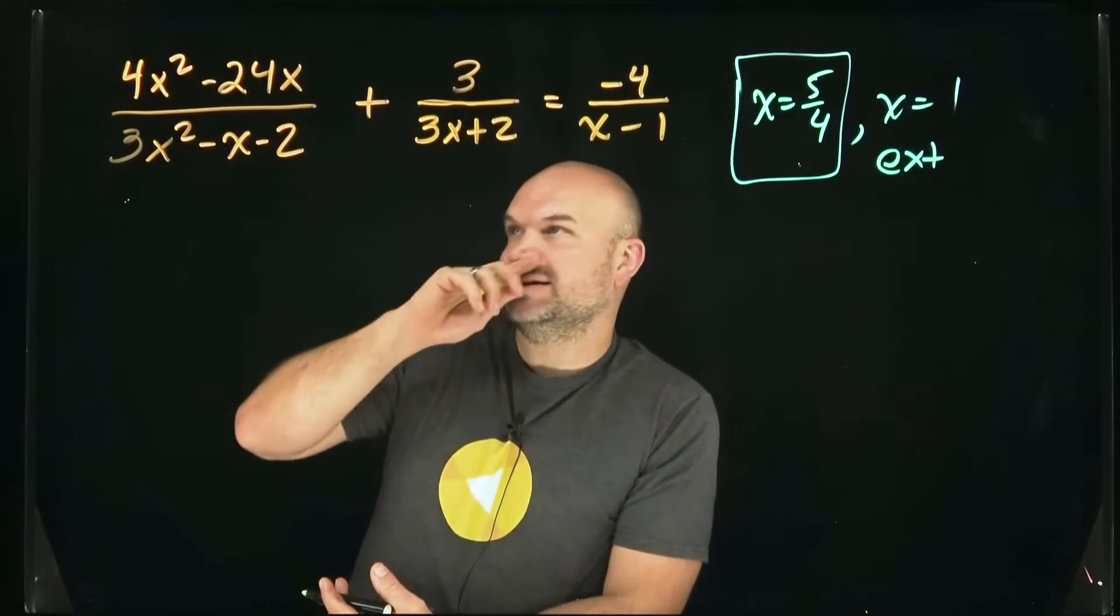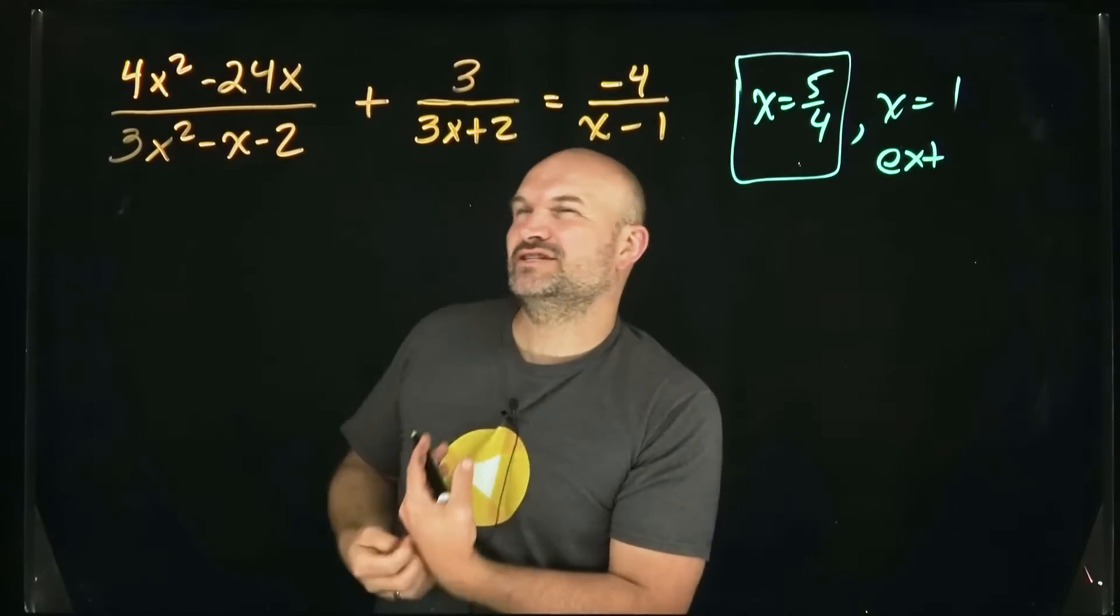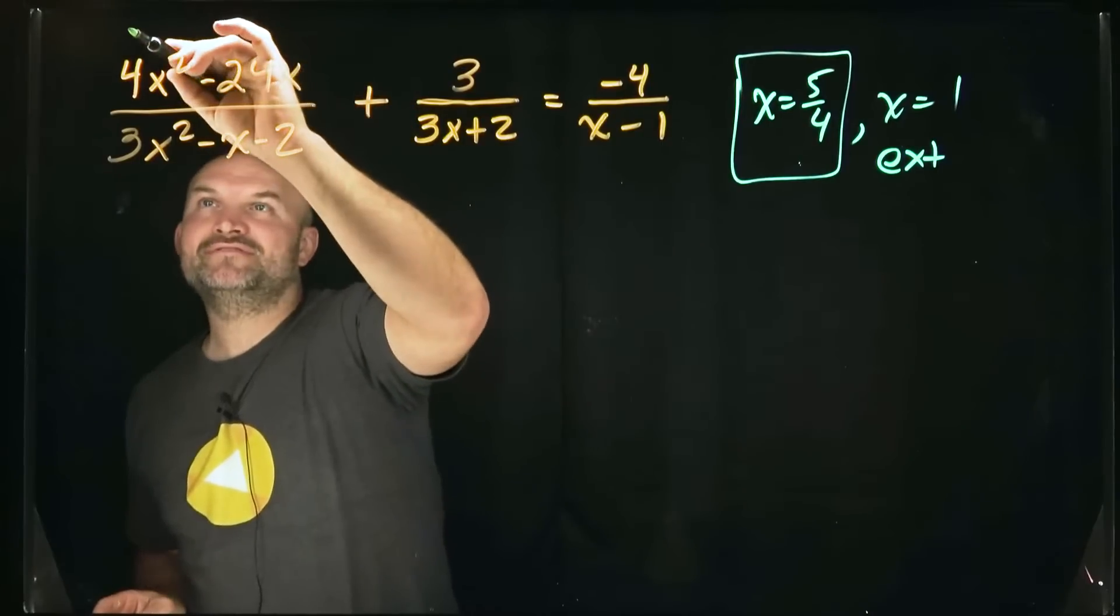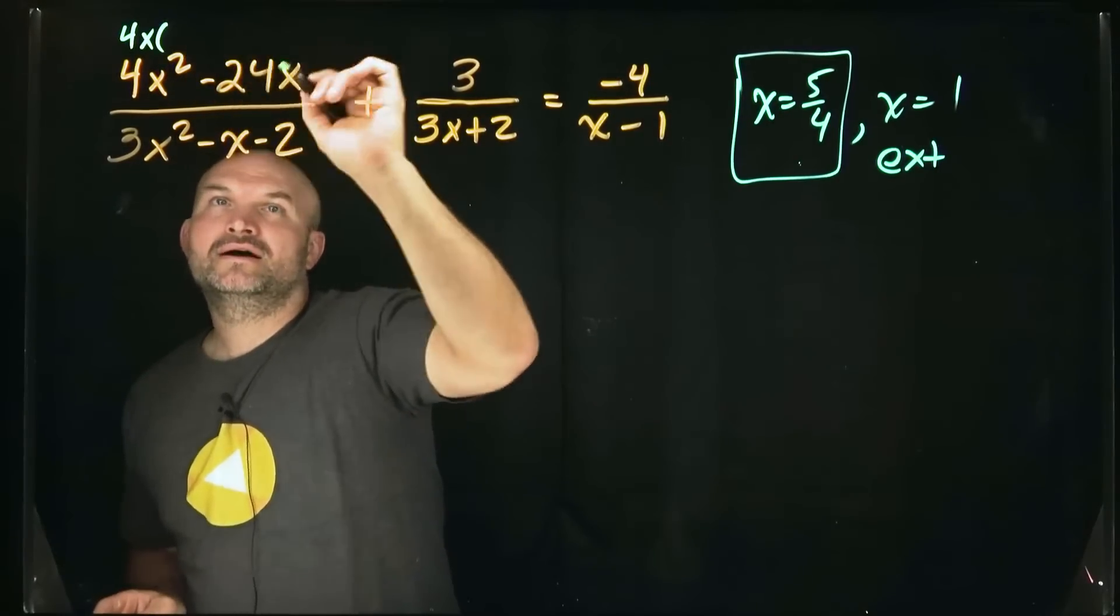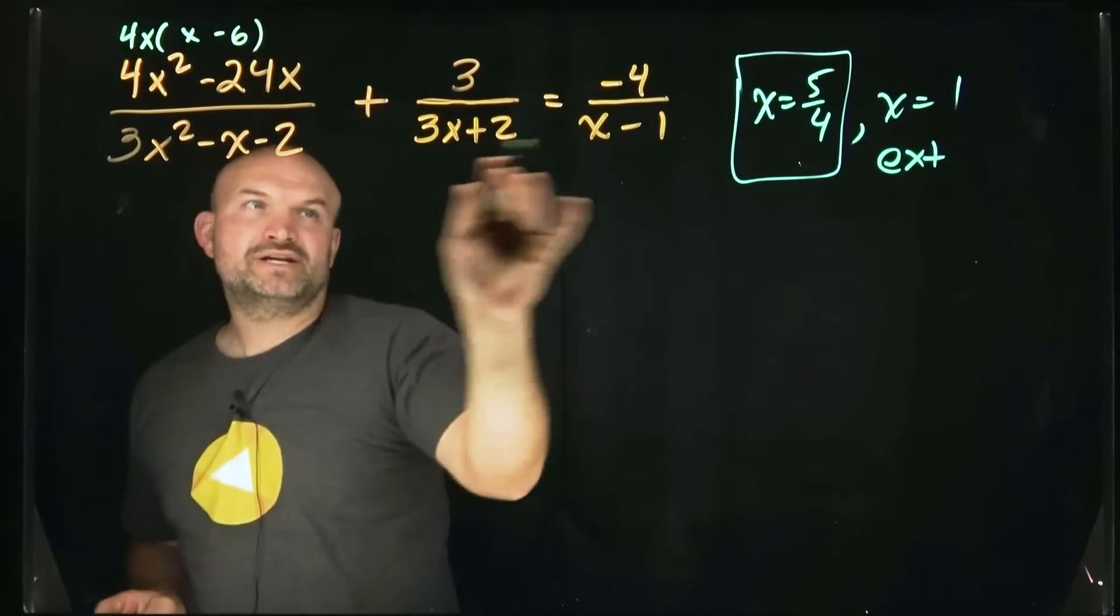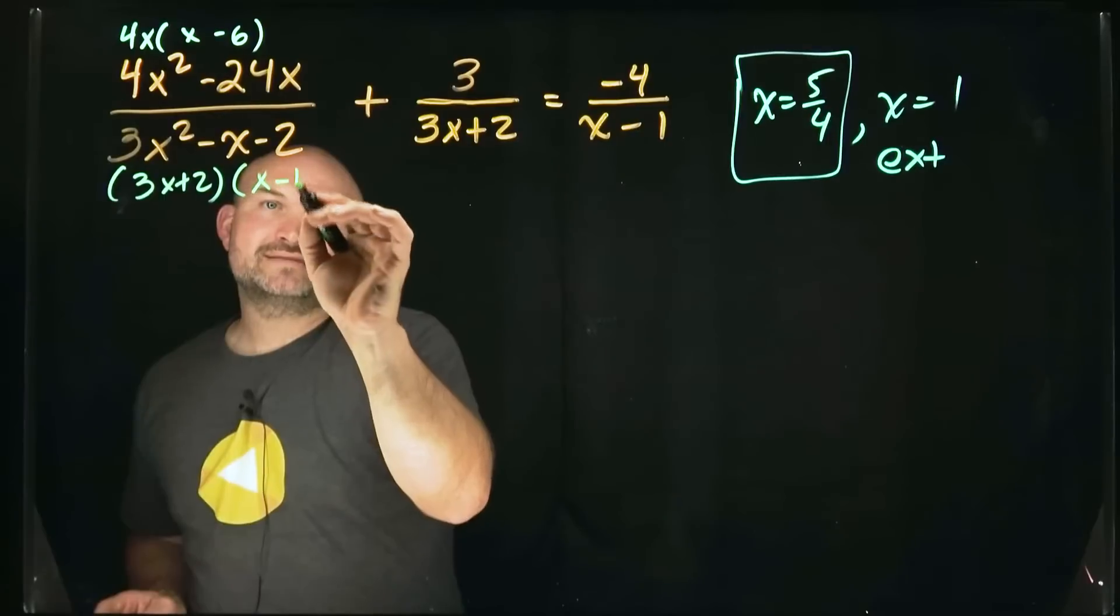So usually when I'm plugging things back in, if something is factorable, I just prefer to be dealing with things in factored form rather than in this quadratic form. So if I factor out a 4x, that would be leaving me with x minus 6. And then over here, that's 3x plus 2 times x minus 1.